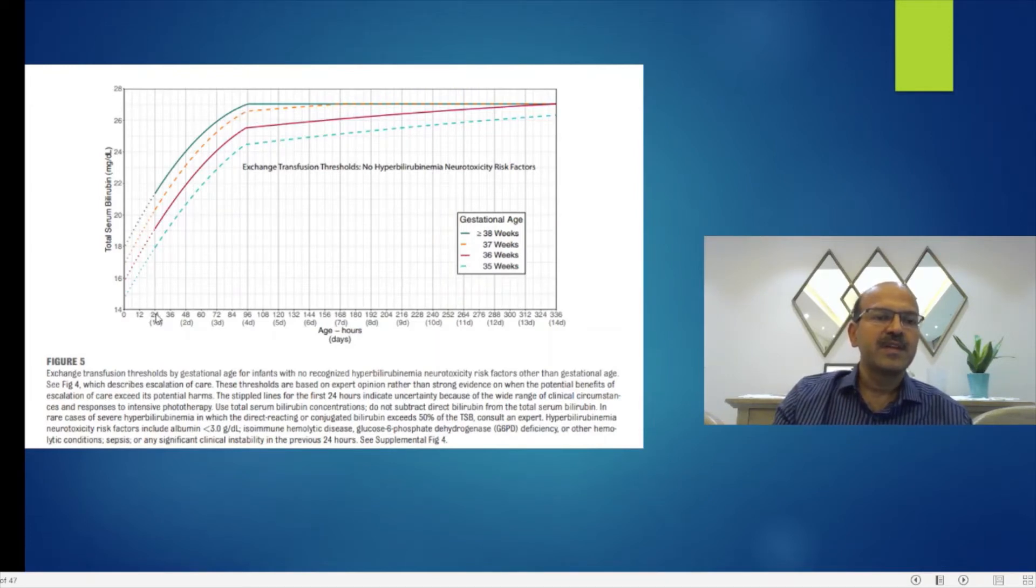In the first 24 hours for these babies, even at a level of 22, 21 for example, and in the first 6 hours even a level of 16 would be indicating exchange transfusion. They have revised these levels, it's better than the previous charts in terms of the number. It has been slightly pushed up which reduces overreaction.